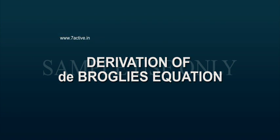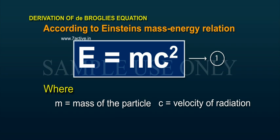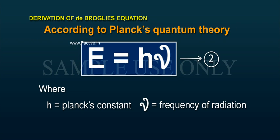Derivation of de Broglie's Equation. According to Einstein's Mass-Energy Relation. According to Planck's Quantum Theory, E is equal to h nu, Equation 2, where h is Planck's constant.